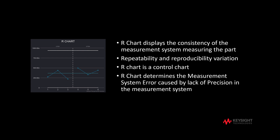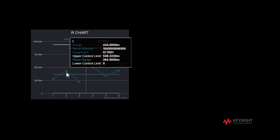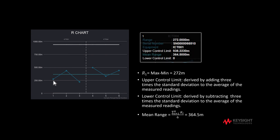The R chart determines the measurement system error caused by lack of precision. Mouse over each point to see several statistical items displayed. The value of each point represents the range.